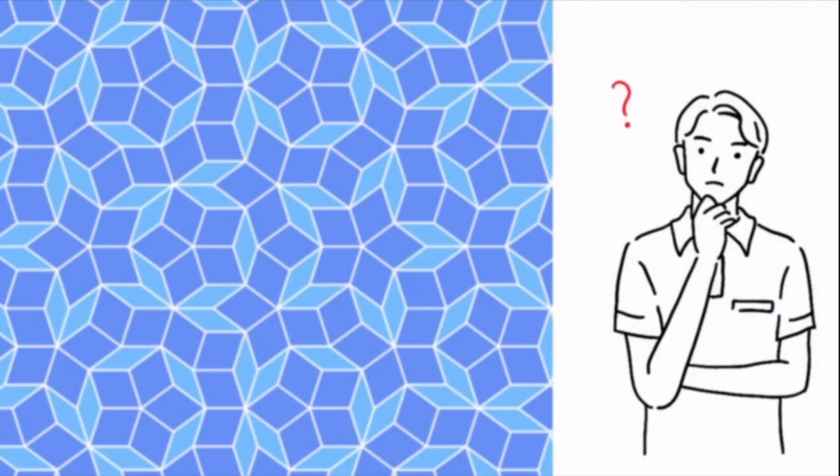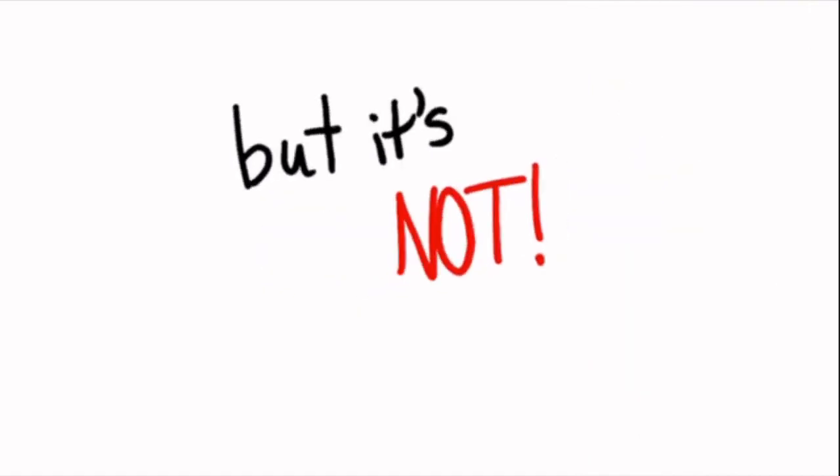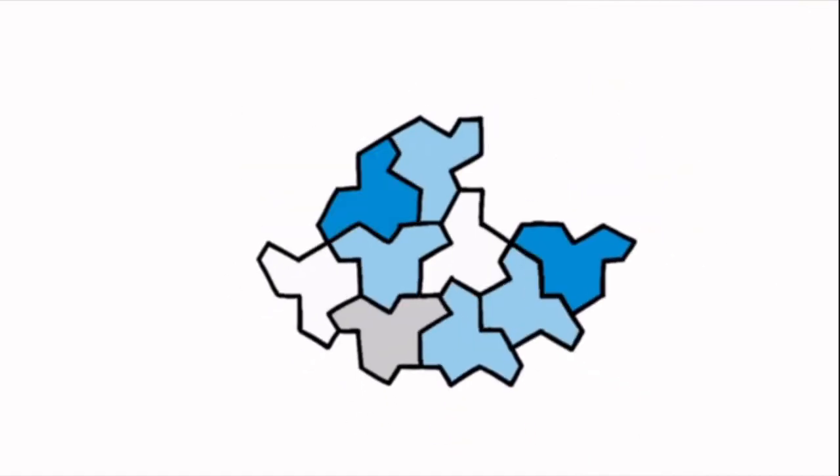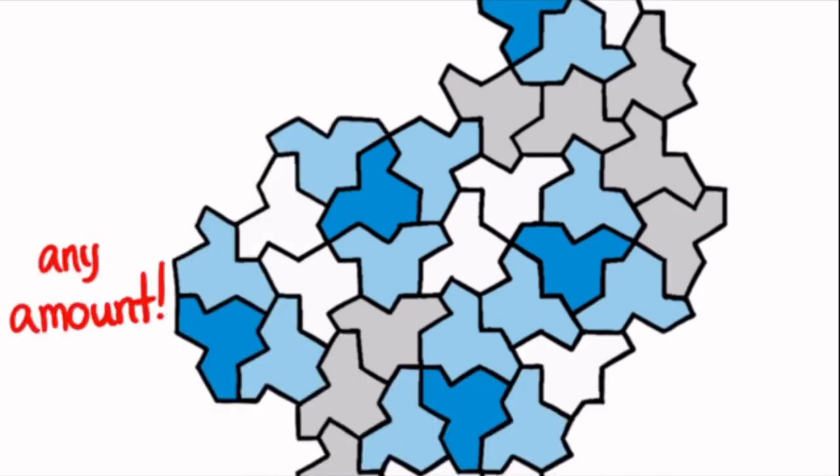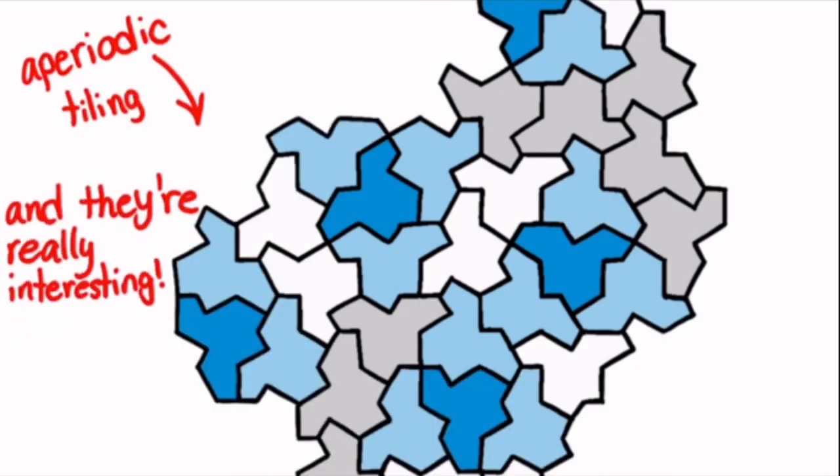Here is a set of tiles. If I were to ask you to arrange them in a way so they'd never repeat, you'd probably say it's impossible. But it's not. There are many arrangements of tiles that do not repeat themselves when translated by any amount. These are called aperiodic tilings and they're really interesting.